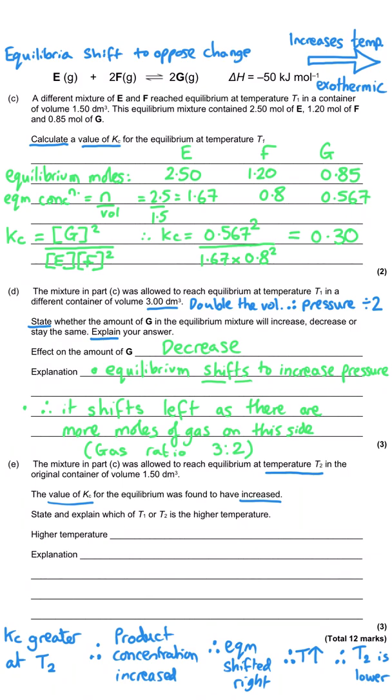And so the higher temperature, therefore, must be T1. And so for the explanation two marks, I would simply say the forward reaction is exothermic. And so the equilibrium has shifted to the right to oppose that reduction in temperature, which therefore means that T2 must be lower.